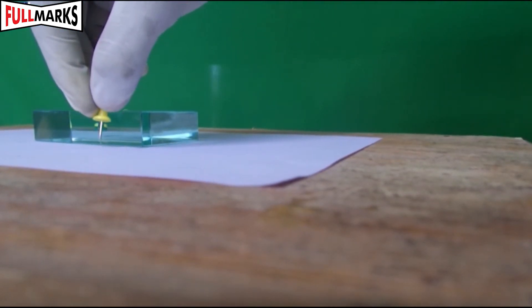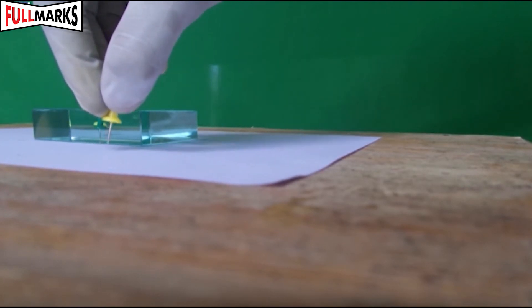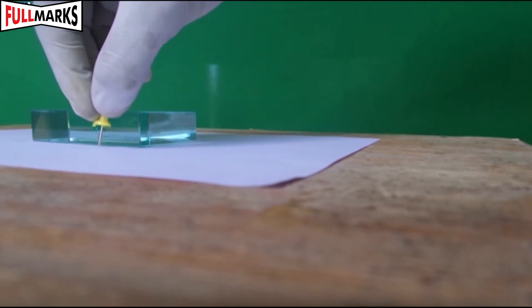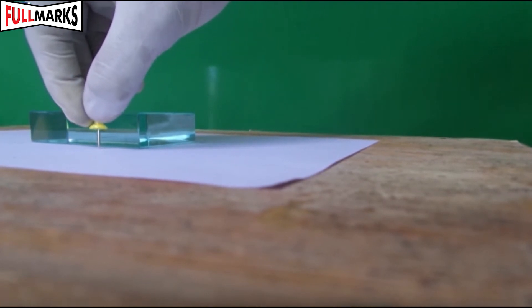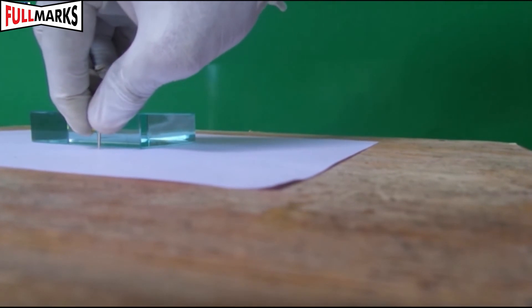Fix two pins. See through the glass slab from side CD and fix pin R and S. Pin P, Q, R and S should lie in the straight line when seen through the glass slab.